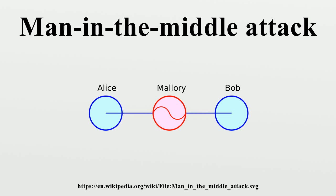Bob thinks that this message is a secure communication from Alice. This example shows the need for Alice and Bob to have some way to ensure that they are truly using each other's public keys, rather than the public key of an attacker. Otherwise, such attacks are generally possible, in principle, against any message sent using public key technology. Fortunately, there are a variety of techniques that help defend against MITM attacks.